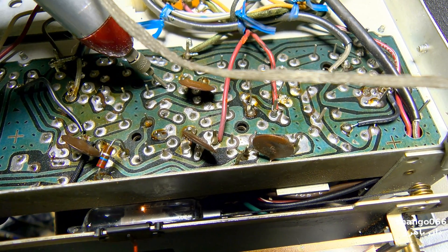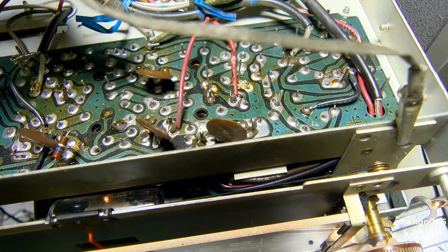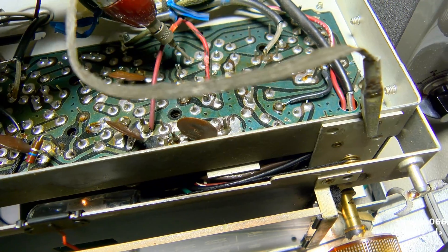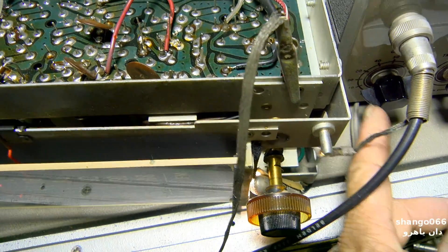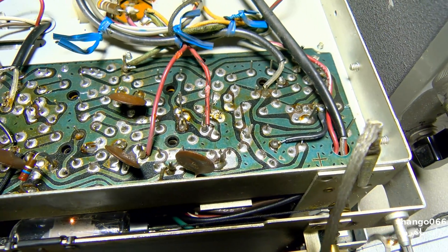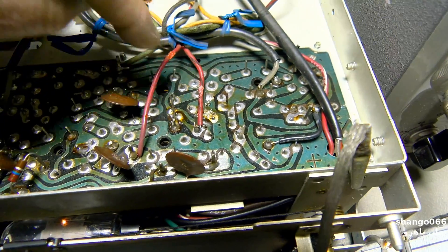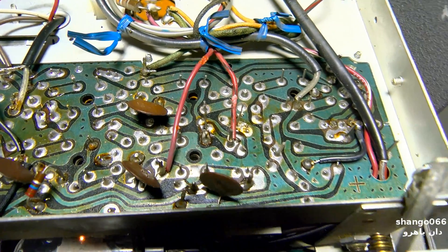So we got a signal there and then nothing over here. So what we're going to do is pull this IF transformer out right here. It's got five pins, one is a ground on the side of the case so we don't need to mark it.